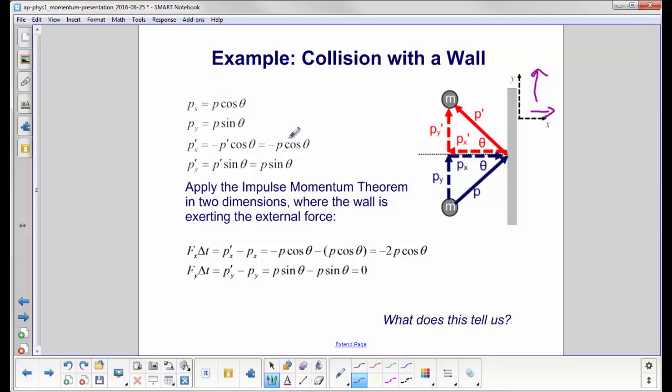Now we're going to apply the impulse momentum theorem in two dimensions. The wall is exerting the external force in this case, and it's a normal force. So in the x direction, we get f sub x delta t is equal to the differences in the x momentum. And we get negative 2p cosine theta. Now look at the y direction. We have p sine theta minus p sine theta. We get zero. What is this telling us?